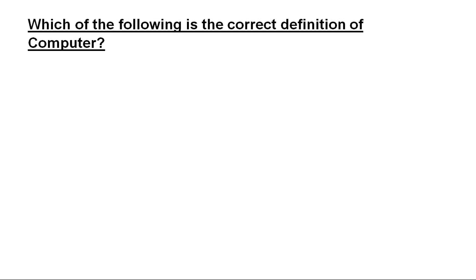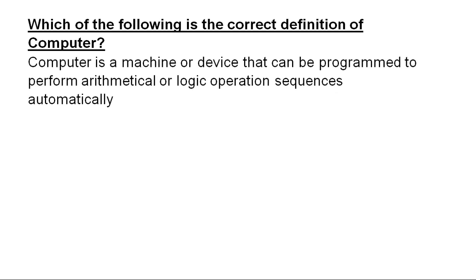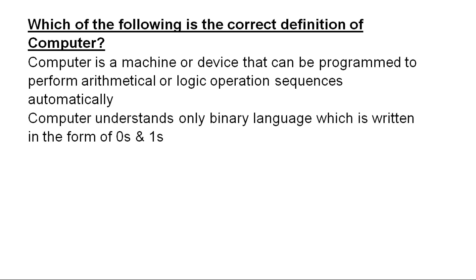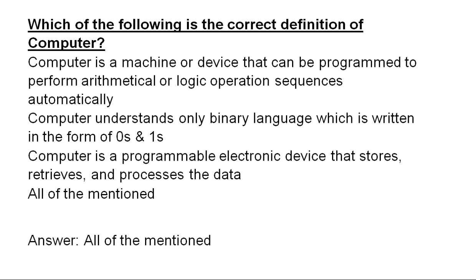Which of the following is the correct definition of computer? A computer is a machine or device that can be programmed to perform arithmetic or logical operations sequences automatically. A computer understands only binary language written in the form of zeroes and ones. A computer is a programmable electronic device that stores, retrieves, and processes data. The answer is: all of the mentioned.